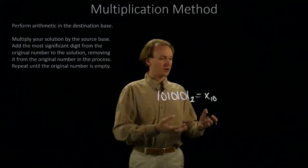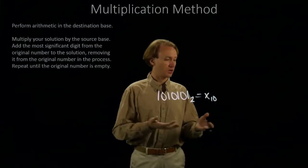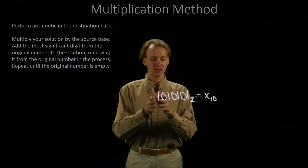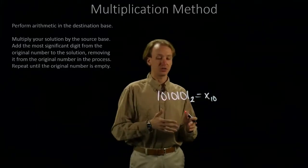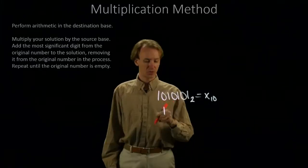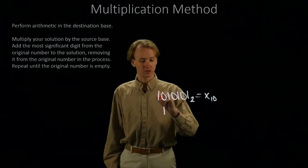And when I start out, my solution is 0. I don't have anything in my solution. So, I'm just going to go to the second part, which says to take this number and add it to my solution. So, I take this 1 and I'm going to copy it into my solution. I'm going to remove this 1 from my original number.